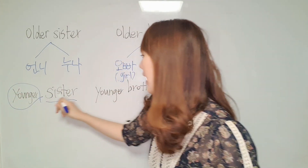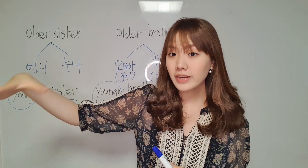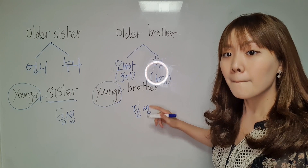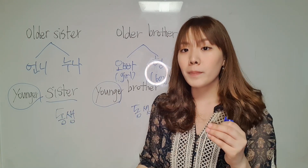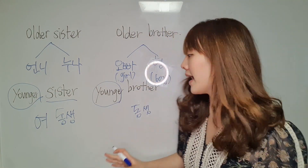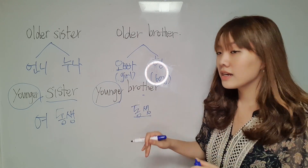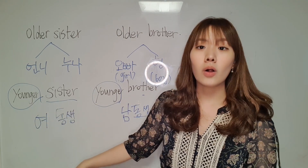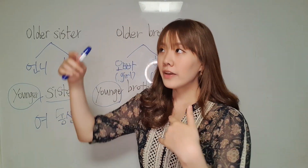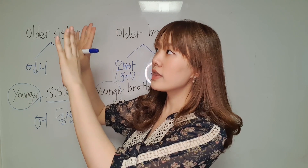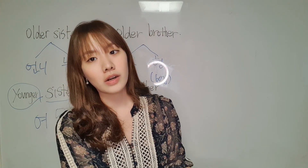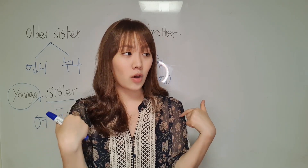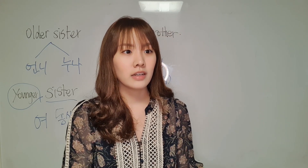For younger siblings, we use 동생. So younger sister and younger brother both start with 동생. For younger sister, she is a girl, so we put 여 — meaning girl — making it 여동생. For younger brother, he is a boy, so we put 남, making it 남동생. However, you don't actually call them 여동생 or 남동생 to their face — you call them by their own name, like 'Lina야.'